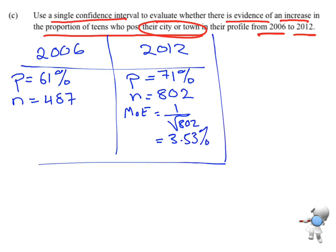Now I'm just going to do the same thing, find the margin of error for 2006. So 1 over square root of n which is 487. Put that into my calculator and I will get a value of 0.0453, which when you multiply by 100 to get to a percentage is 4.53%. So that's a summary of all the data.